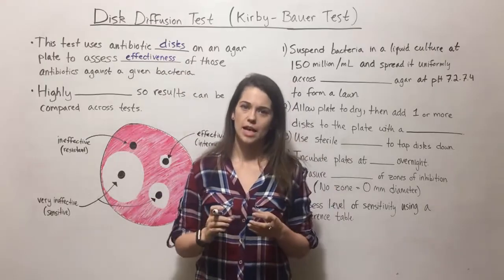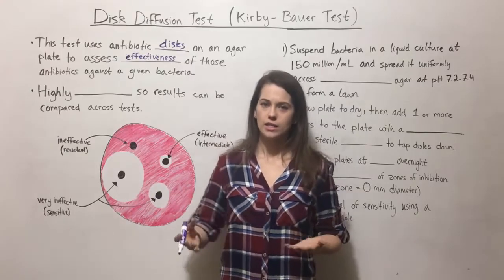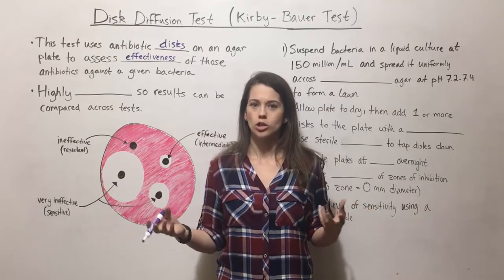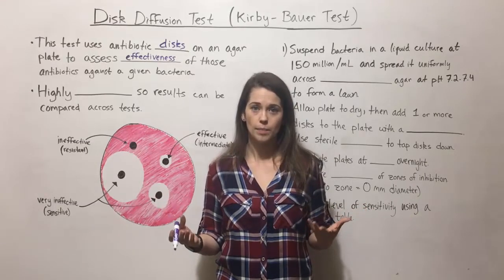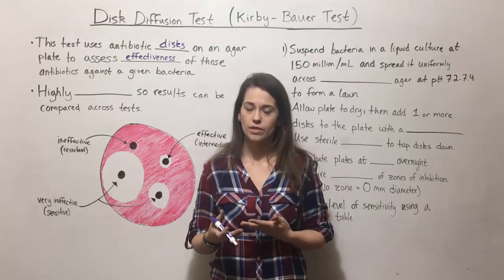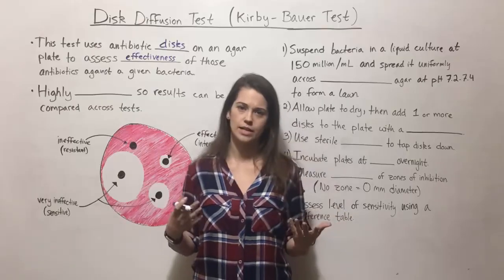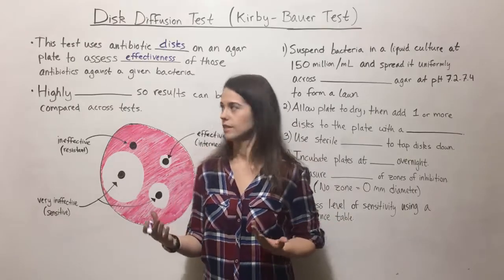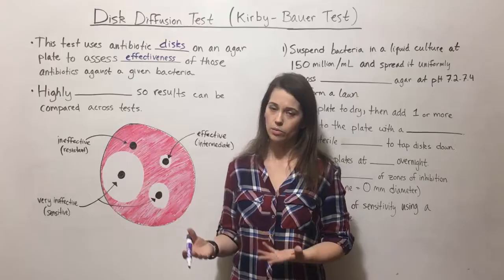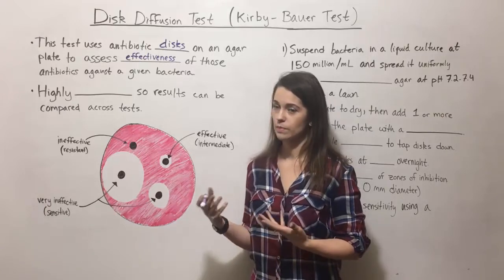Particularly, we assess antibiotics against a specific culture of bacteria. With antibiotic resistance, you can have two different species of bacteria, or even two different strains of the same bacterium, that because of small genetic differences — for example, some strains have acquired a plasmid with antibiotic resistance genes — can have vastly different types of antibiotic resistance. So the disc diffusion test helps us identify which antibiotics are effective or ineffective against a specific kind or specimen of bacteria.